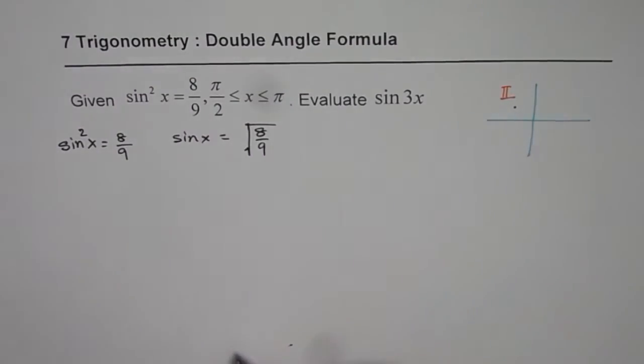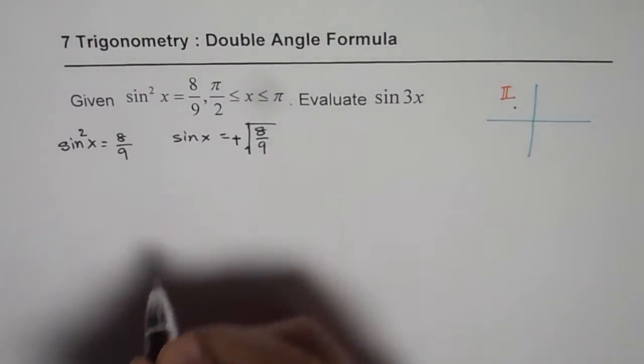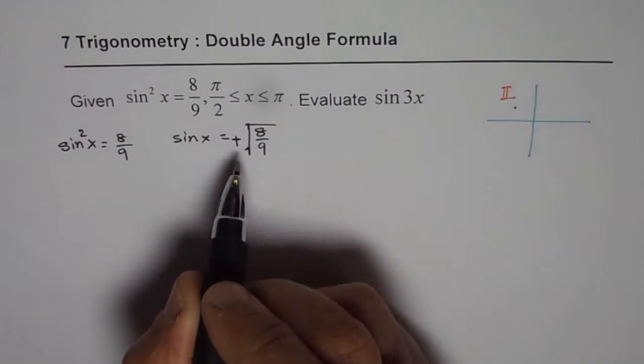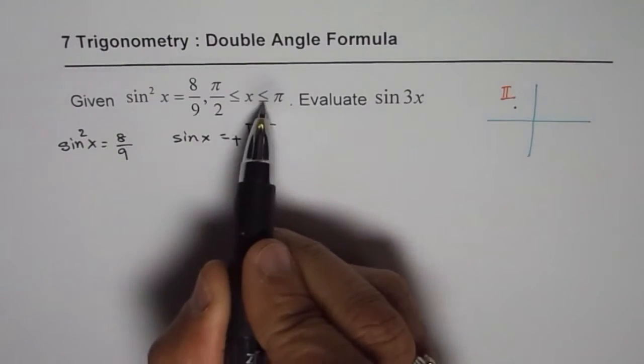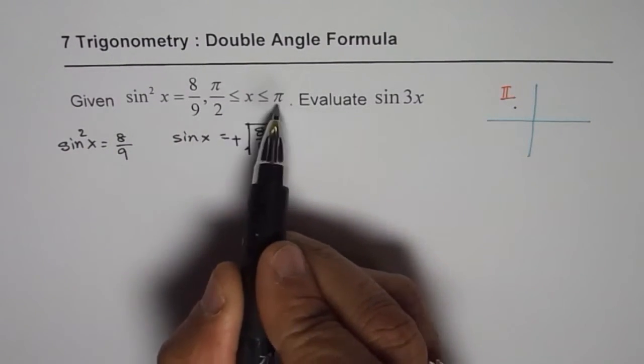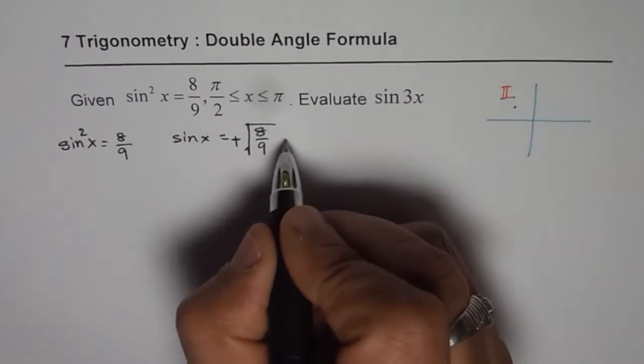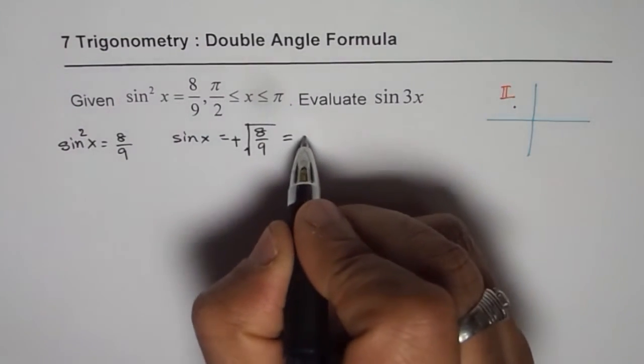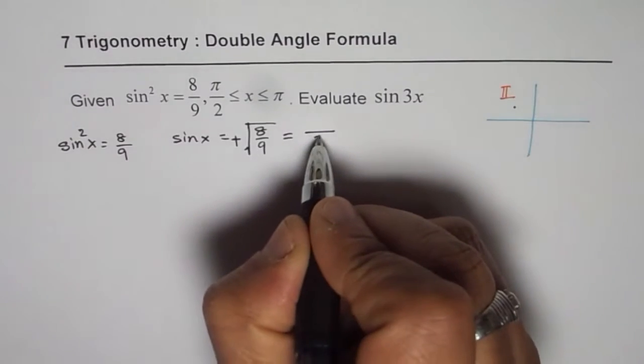Since x is in quadrant 2, we will be considering only the positive root. So that is the whole idea of understanding that x is between π/2 and π. That is very important.